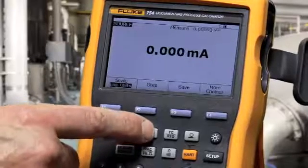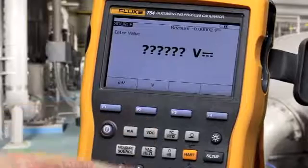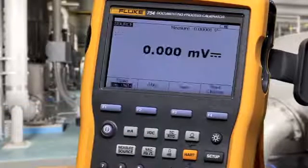To source volts DC, select the function. Type in your value and press enter.